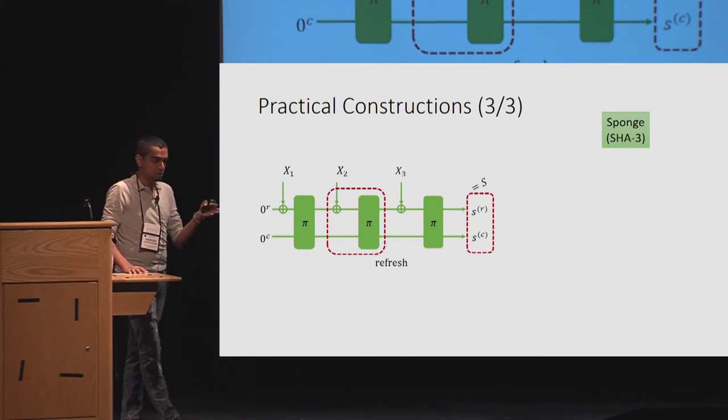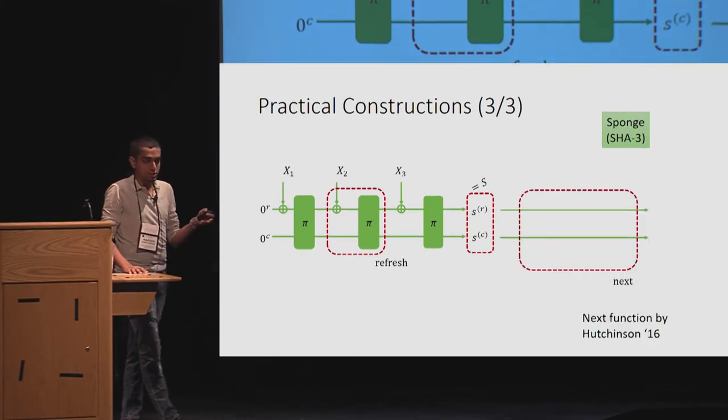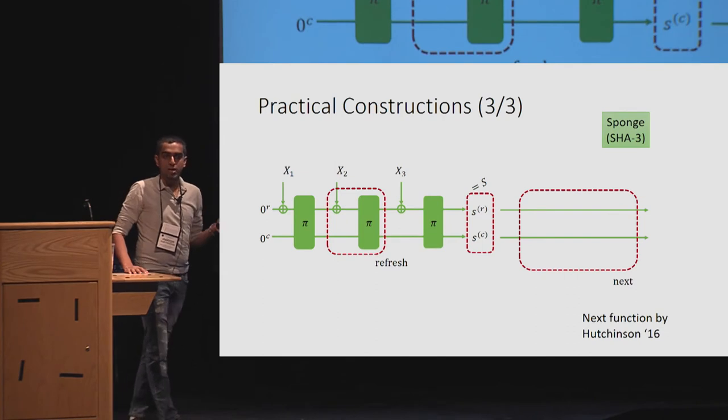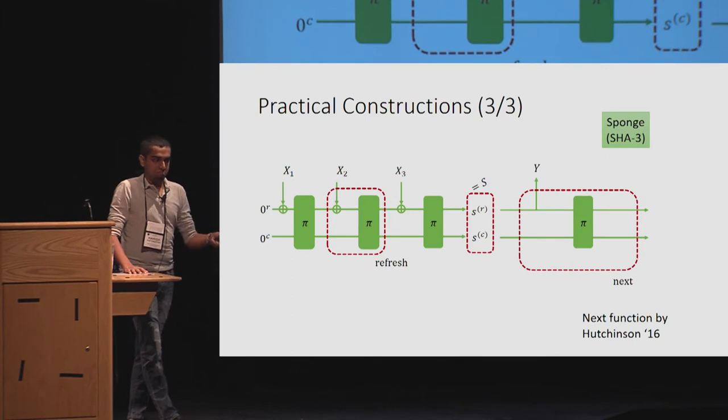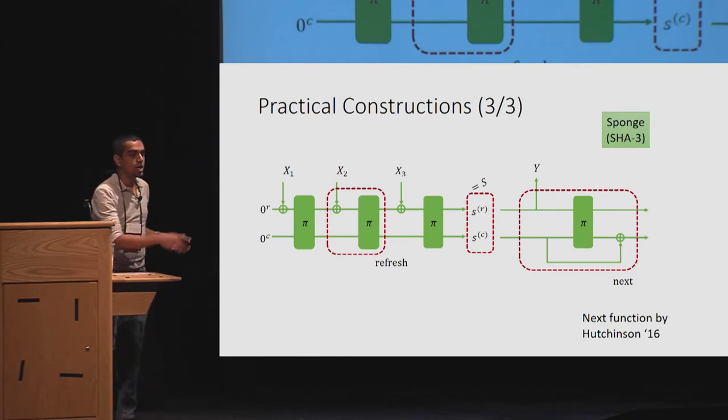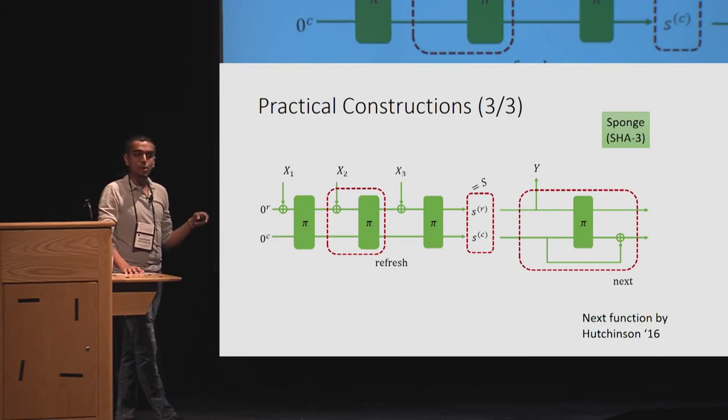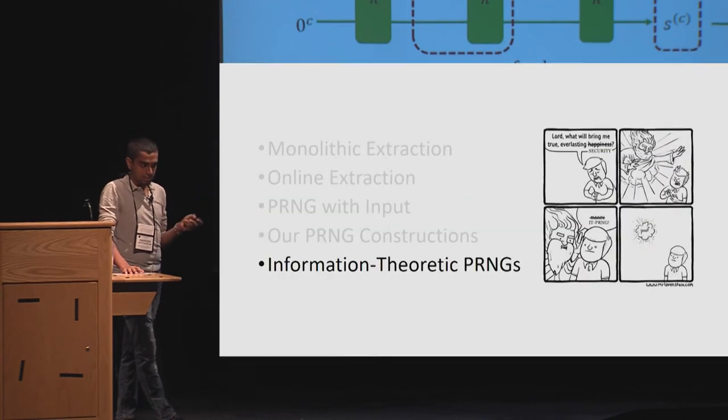I'm just going to jump right to the sponge construction. This next is a modification proposed by Hutchinson in 2016, where the output Y is first. The first R bits becomes the output. And then there's a PI call. The output of next is now, the seed is now exorbed with the output of PI. This is done to ensure that we can't have inversion queries. This is the sponge.